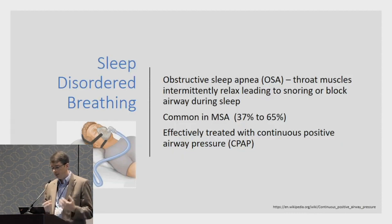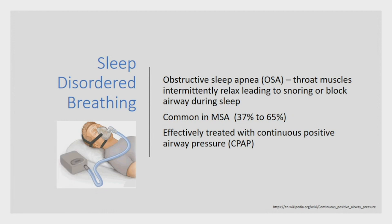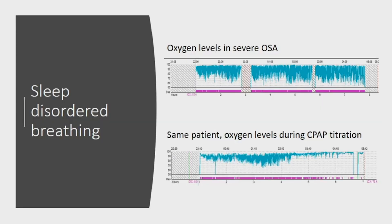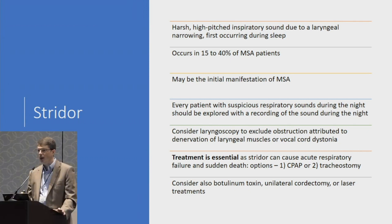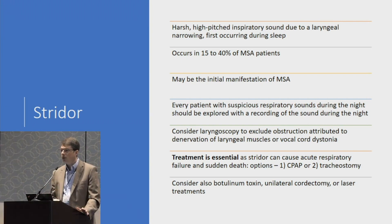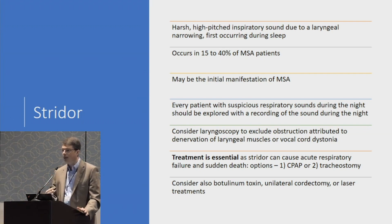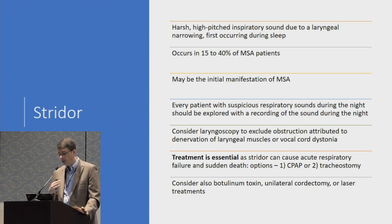Disordered breathing — sleep apnea — is a big deal in MSA, and quite common. It is effectively treated with CPAP, or continuous positive airway pressure. Another important feature of multiple system atrophy to watch for is what's called respiratory stridor — that high-pitched breathing. Sleep apnea is where a patient stops breathing for a period of time and oxygen levels drop, and that can happen multiple times a night. Inspiratory stridor occurs in up to 15 to 40% of patients with MSA and can even be an initial manifestation of the disease.